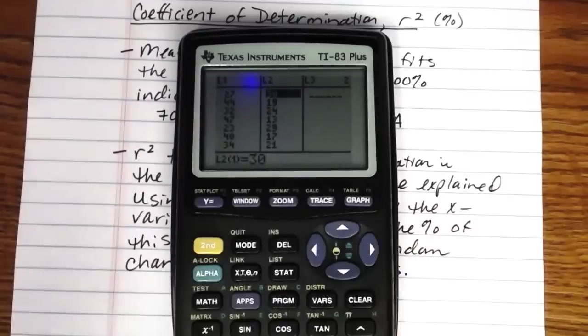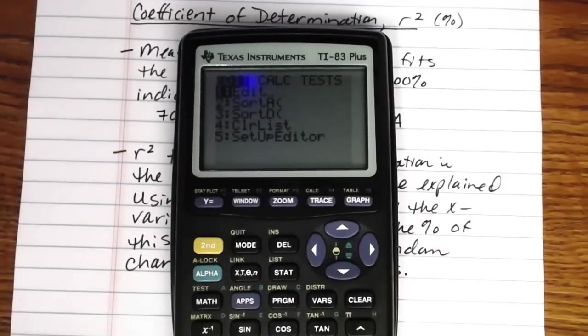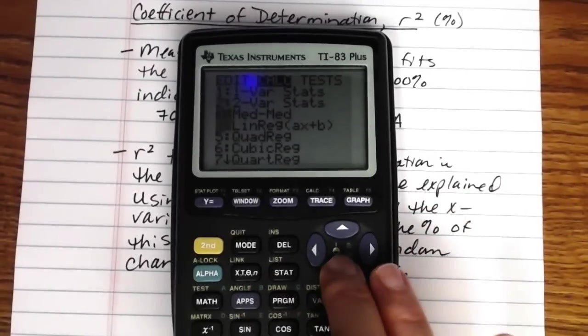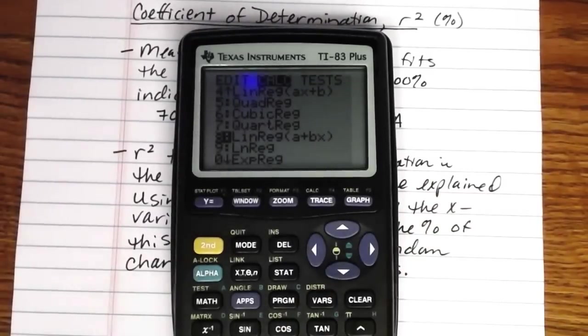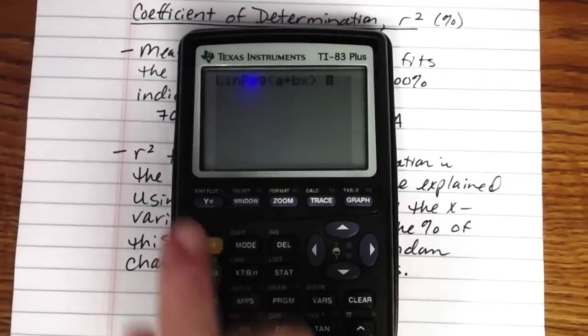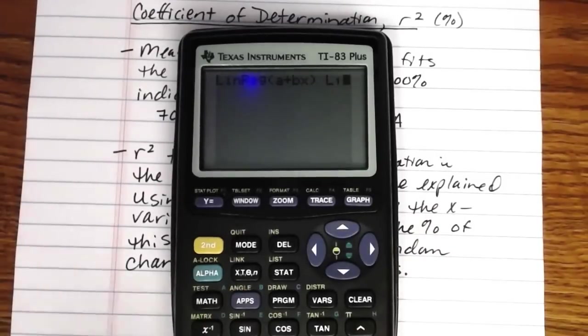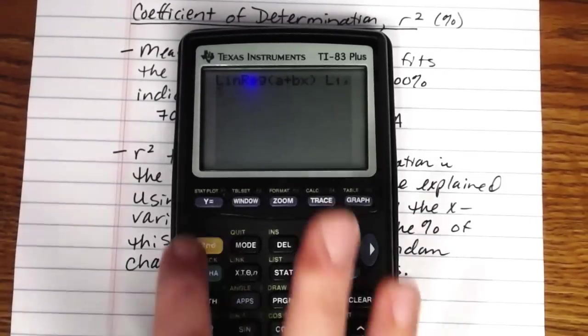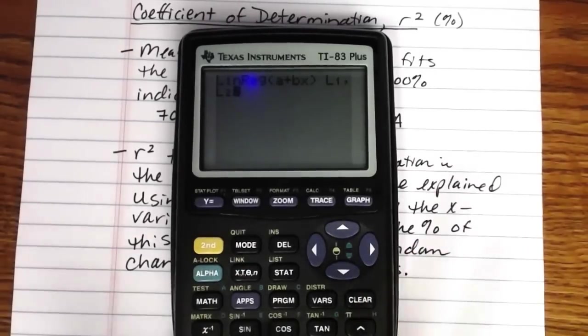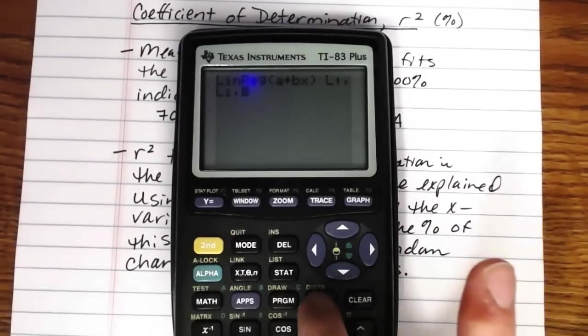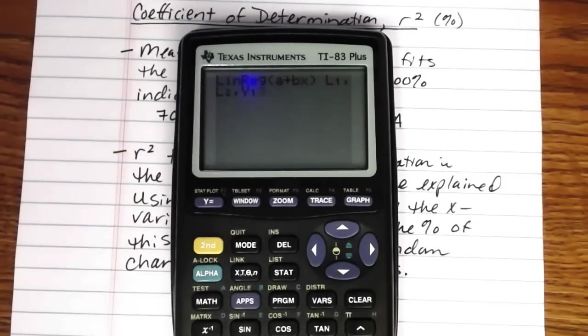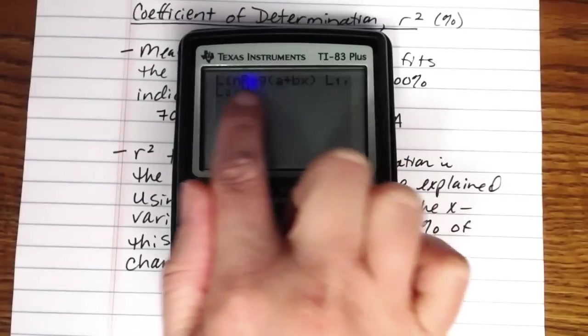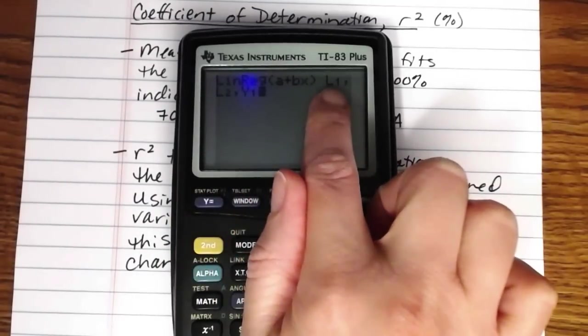So when I'm looking here, I've already put my data in. In the last video, we talked about going to stat, to calc, down to option eight, either by using the arrow key or just by pressing the number eight. Selecting that, doing second one for your x data. So list one, comma, second two, list two, comma. Then to vars, y vars, select function by pressing enter, and select y1 by pressing enter.